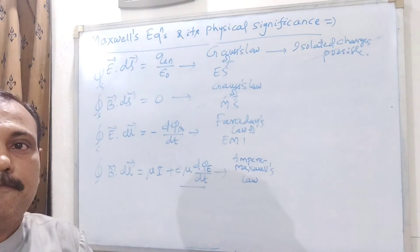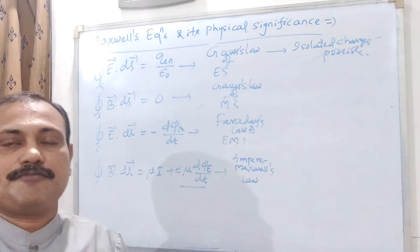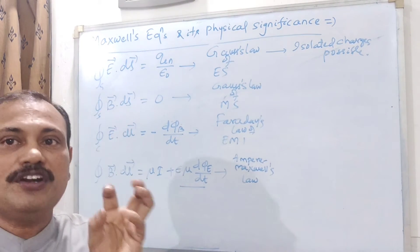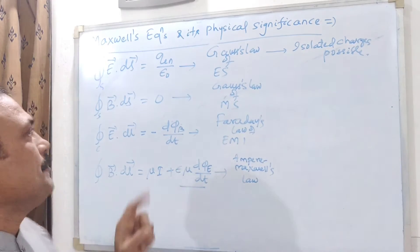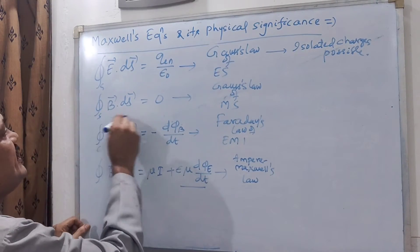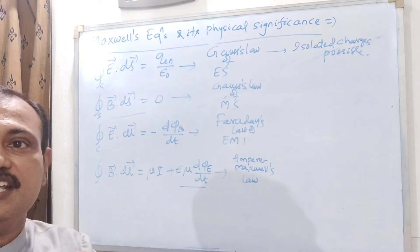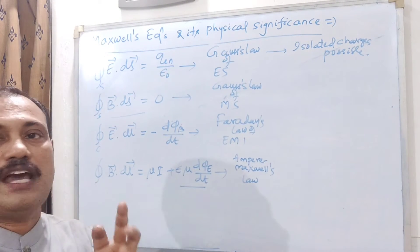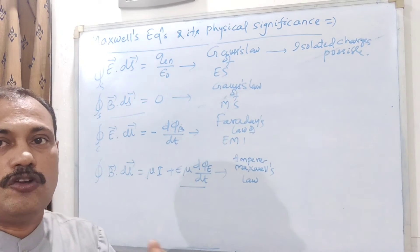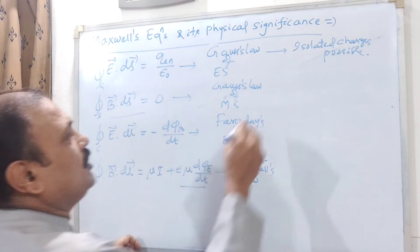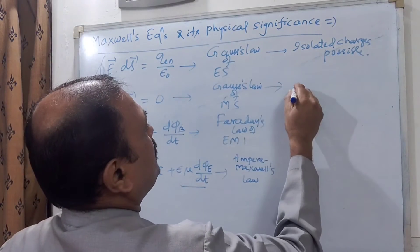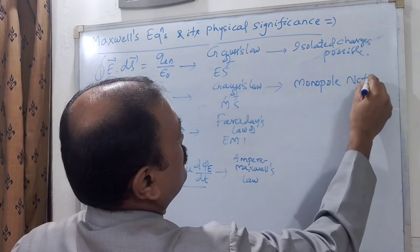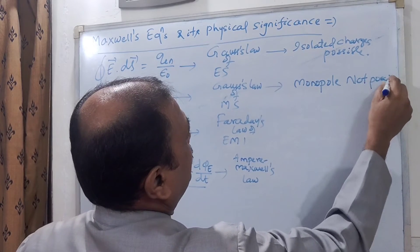You can have a single positive charge of 5 coulombs or a negative charge of 7 coulombs — you can hold an isolated charge. But in the second case, isolated magnetic poles are not possible. That means monopoles cannot exist; you cannot show a single north pole or south pole. Magnetic monopoles are not possible.